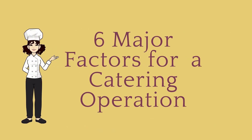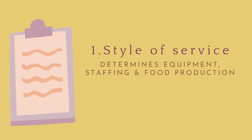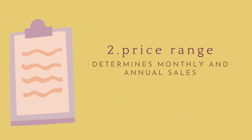For a successful catering operation, there are six major factors to consider. First is the style of service, which determines equipment, staffing, and food production needs. Second is the price range, which determines both the monthly forecasted catering sales volume and the anticipated annual profit.